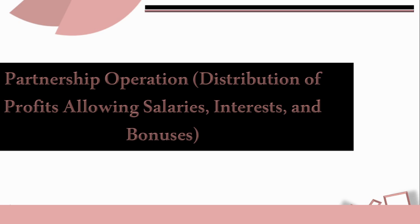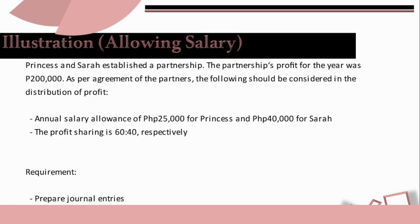Distribution of profits allowing salaries, interests, and bonuses. So let's proceed with our first illustration. Princess and Sarah established a partnership. The partnership's profit for the year was P200,000. As per agreement of the partners, the following should be considered in the distribution of profit: annual salary allowance of P25,000 for Princess and P40,000 for Sarah. The profit sharing is 60-40 respectively. Our requirement is the preparation of journal entries.